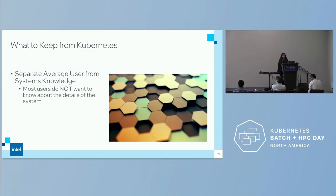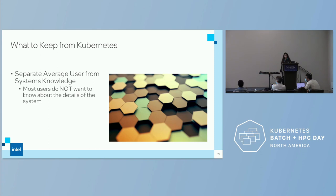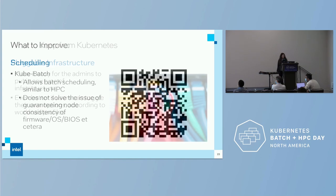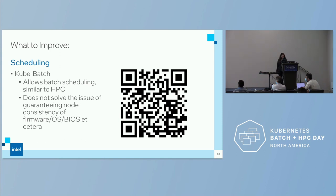What do we want to keep from Kubernetes? We want to separate the average user from systems knowledge — there's no reason for an average user to need to know intricate details of your system, and they don't want to. People are moving toward AI/ML because they don't have to know systems knowledge. We also want to keep pluggable infrastructure, making it easy for admins to put in any type of infrastructure. We still have scheduling improvements too — kubebatch allows batch scheduling similar to HPC and is used in a variety of systems.